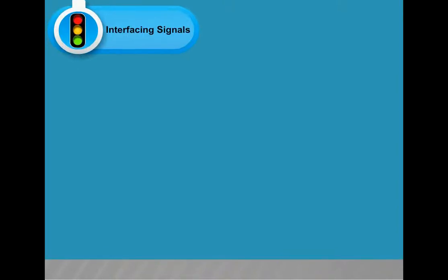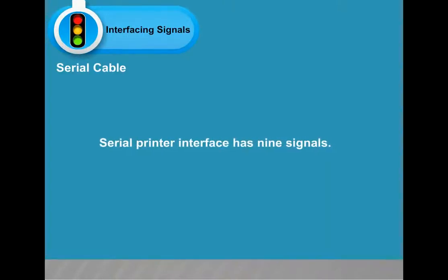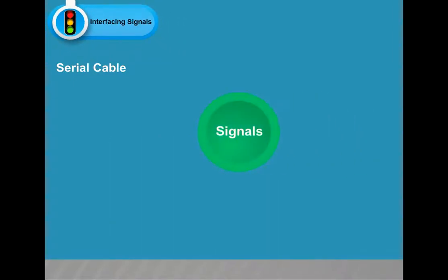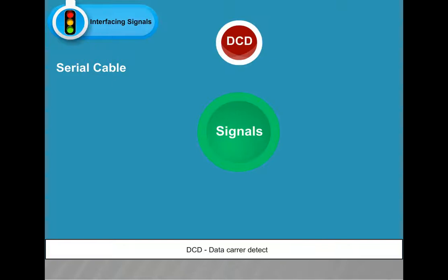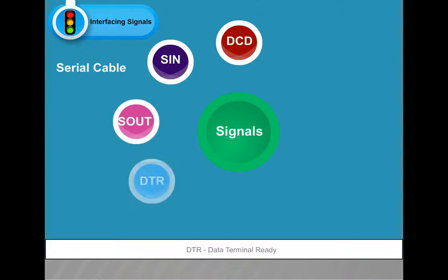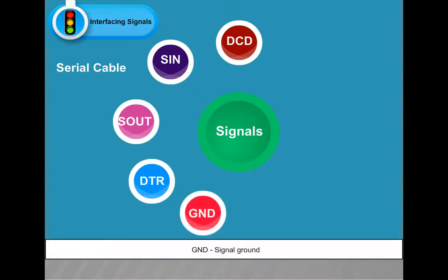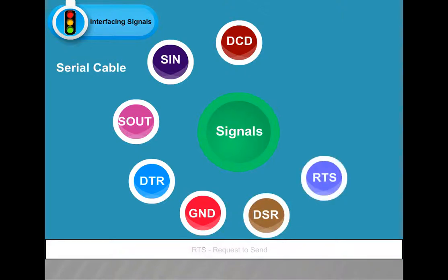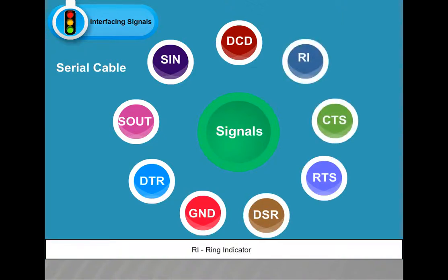Serial printer interface has nine signals: DCD (Data Carrier Detect), SIN (Serial Input), SOUT (Serial Output), DTR (Data Terminal Ready), GND (Signal Ground), DSR (Data Set Ready), RTS (Request To Send), CTS (Clear To Send), and RI (Ring Indicator).